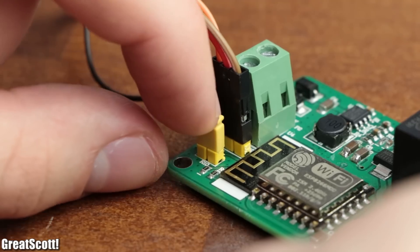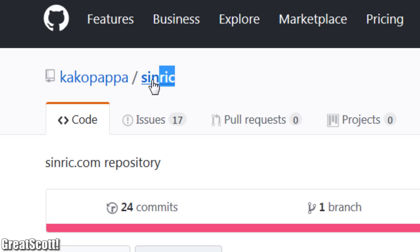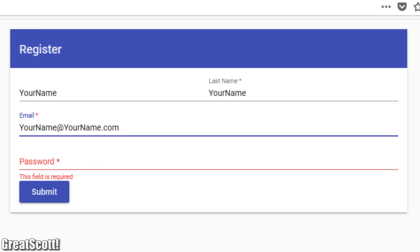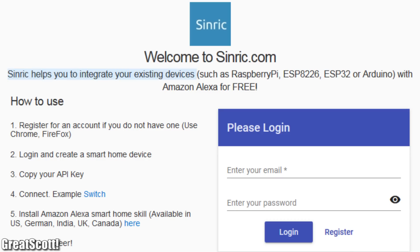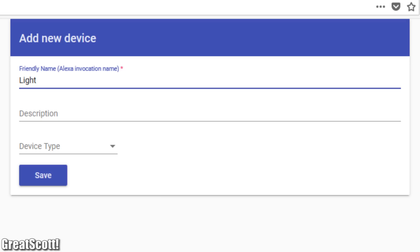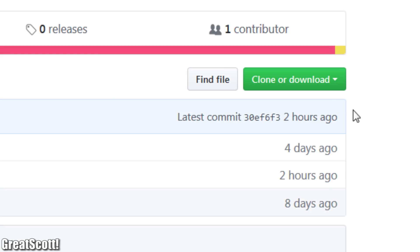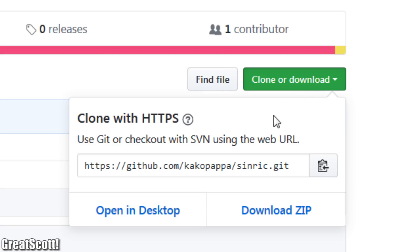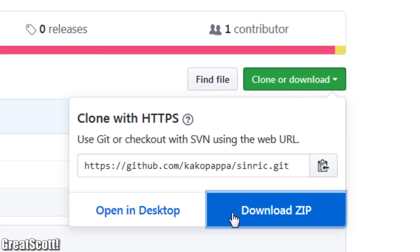So I ditched that idea and instead went with a bulletproof method provided by Keiko Papa. Firstly I had to create an account on SinRic, which is an IoT site that can connect all kinds of boards with Alexa. Then I added a smart home device which I will call Light and continued by downloading the example SinRic ESP8266 code from GitHub.